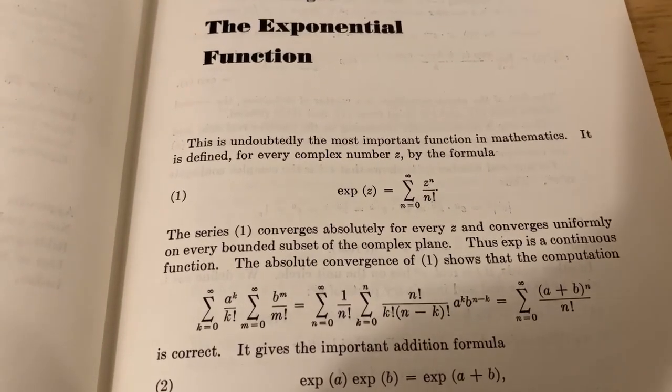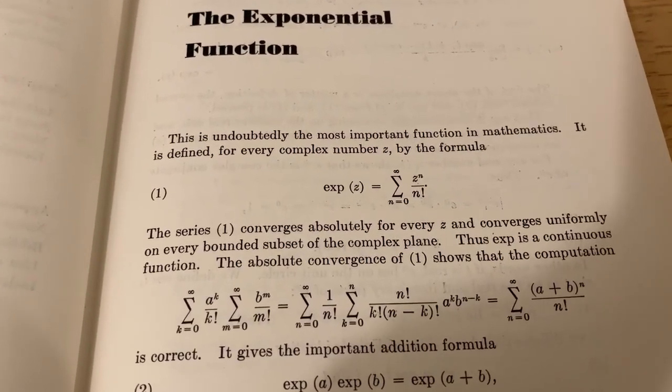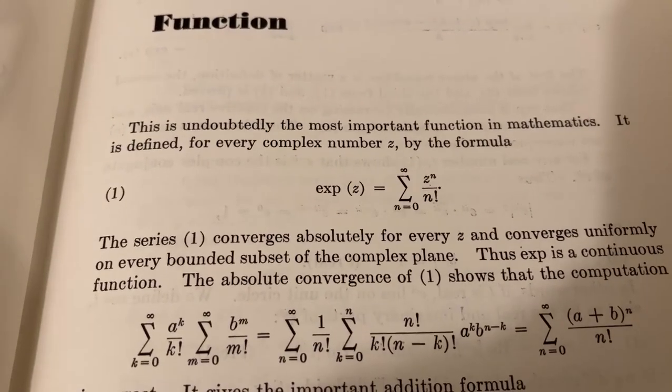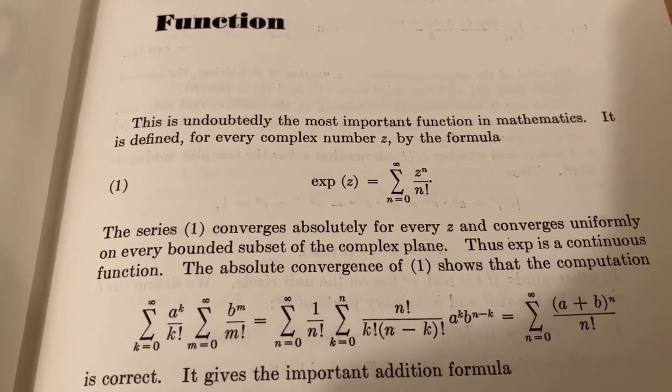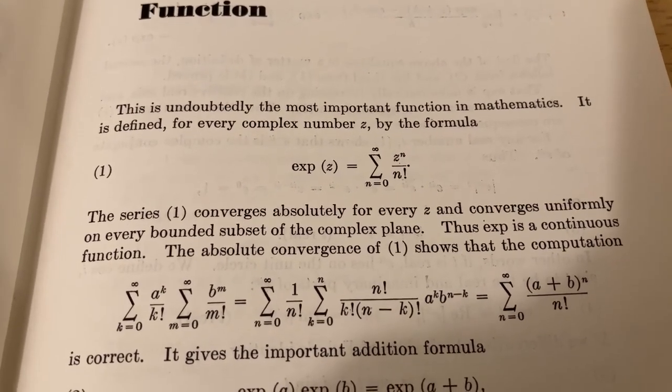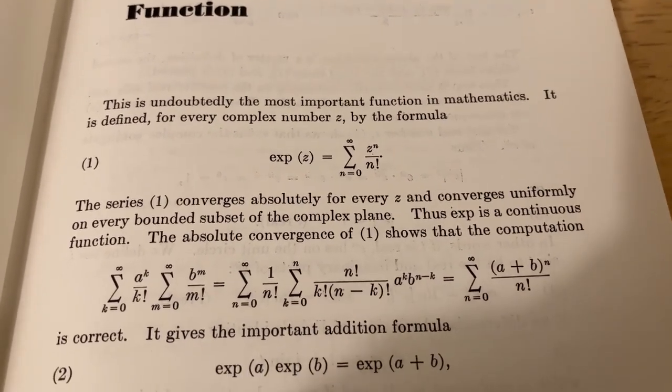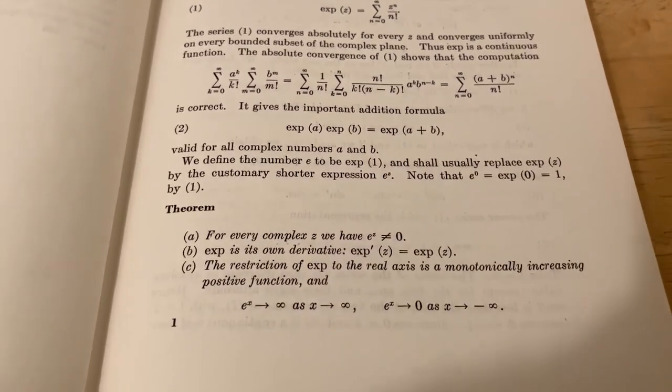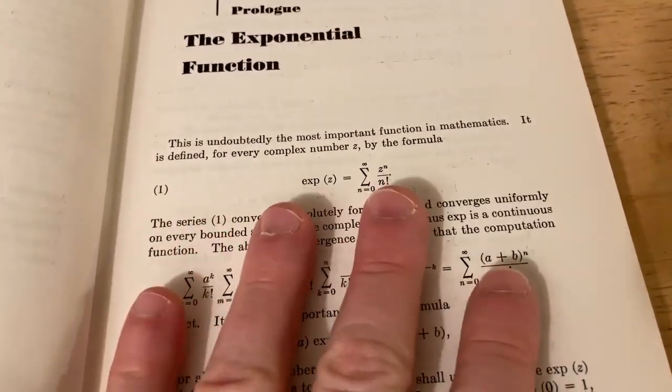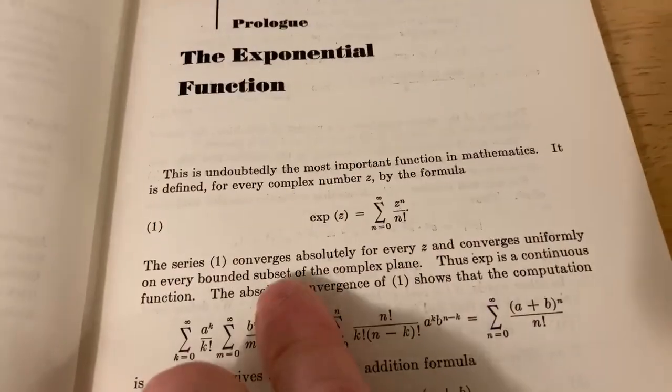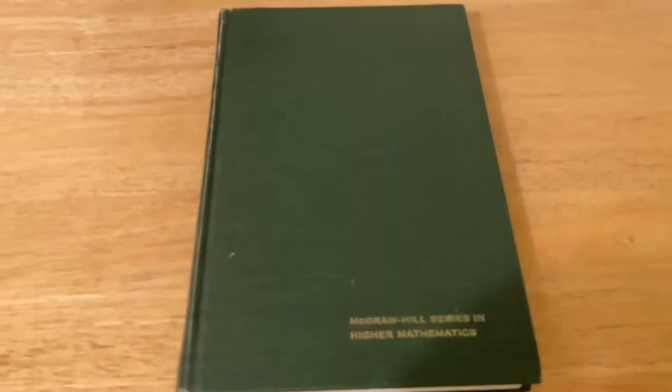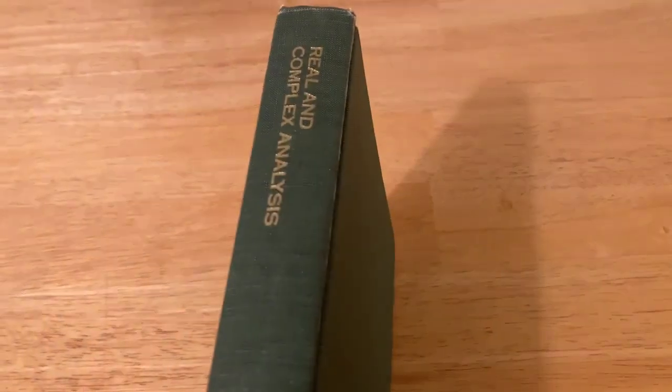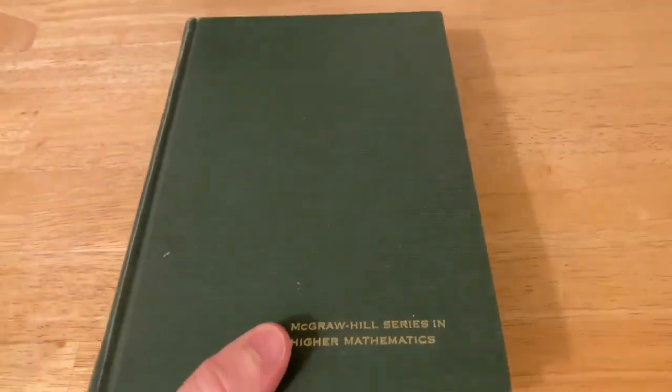This is the beginning of the book. This is undoubtedly the most important function in mathematics. It is defined for every complex number z by the formula. Then he goes on to say that the series converges absolutely for every z and converges uniformly on every bounded subset of the complex plane. Thus, exp is a continuous function. Really cool. And he goes on and talks about it a little bit more here. So you do have to know some mathematics. Even from the beginning, it's assuming that you know what all of this means. I think anyone who studies math should have a copy of this book eventually. It just belongs in a math library. It's a classic. And again, it's Real and Complex Analysis by Rudin.